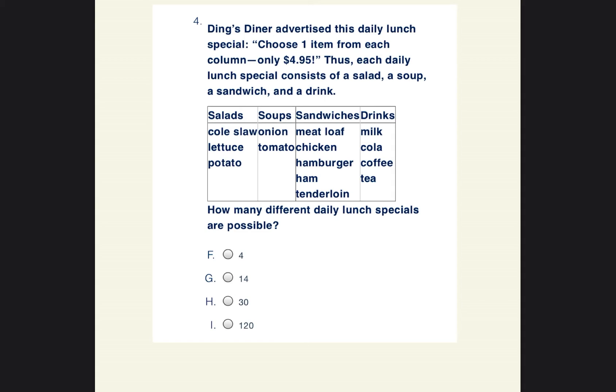So this is a very simple question. If they're just asking how many different combinations are possible, all you have to do is say, okay, you pick a salad, a soup, a sandwich, and a drink. Okay, so how many salad choices are there? So you can have coleslaw, lettuce, or potato. So there's three salad choices.